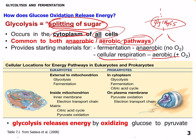Here we can look at the differences between eukaryotes and prokaryotes. Prokaryotes — listed as bacteria — in the cytoplasm have glycolysis, fermentation, and the citric acid cycle. On the plasma membrane, they have pyruvate oxidation and electron transport chain. They still have similar mechanisms but just in different places, and they don't have mitochondria. Eukaryotes have glycolysis and fermentation external to the mitochondrion, usually in the cytoplasm. Inside the mitochondria, in the inner membrane, we have the electron transport chain. In the mitochondrial matrix, we have the citric acid cycle — also called the Krebs cycle or tricarboxylic acid cycle — and pyruvate oxidation.